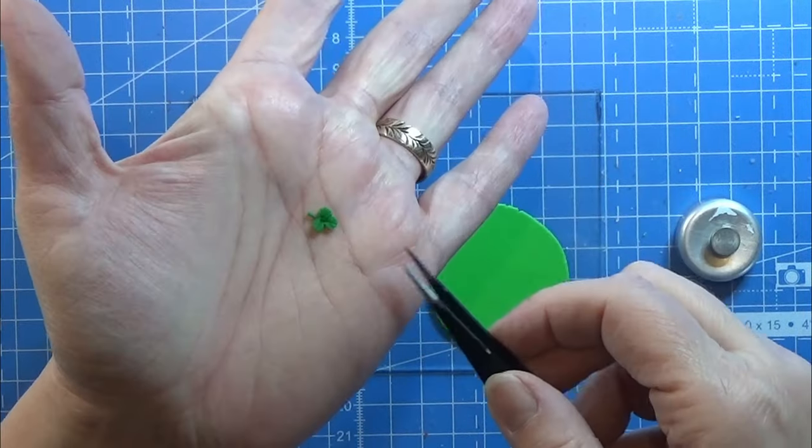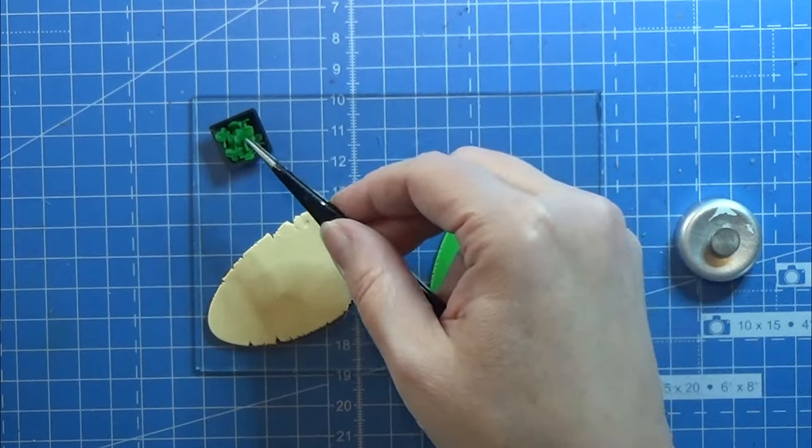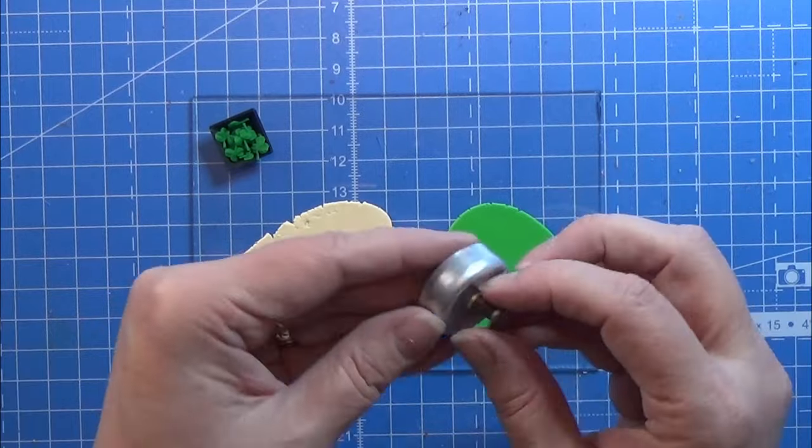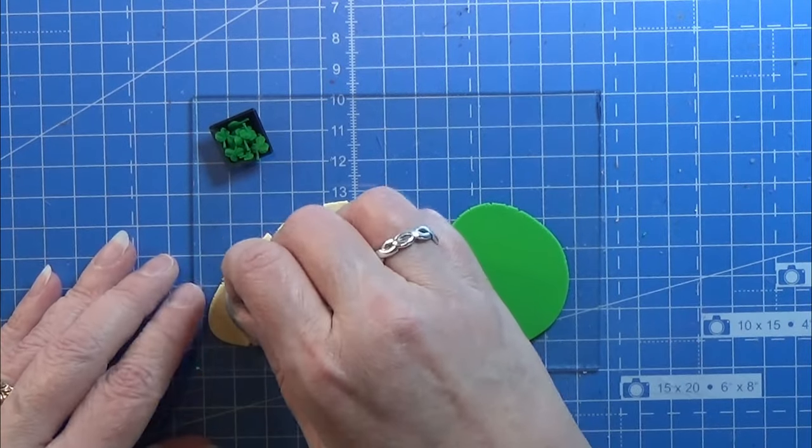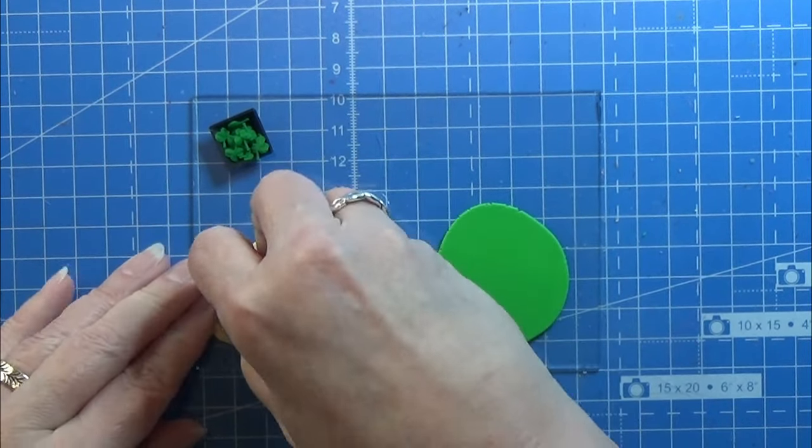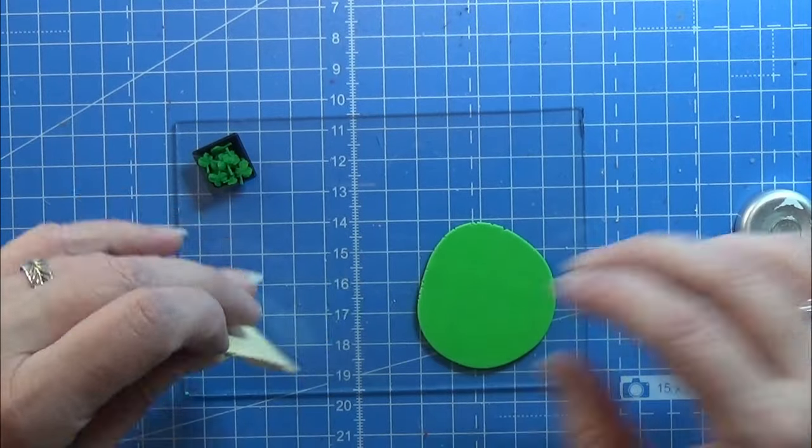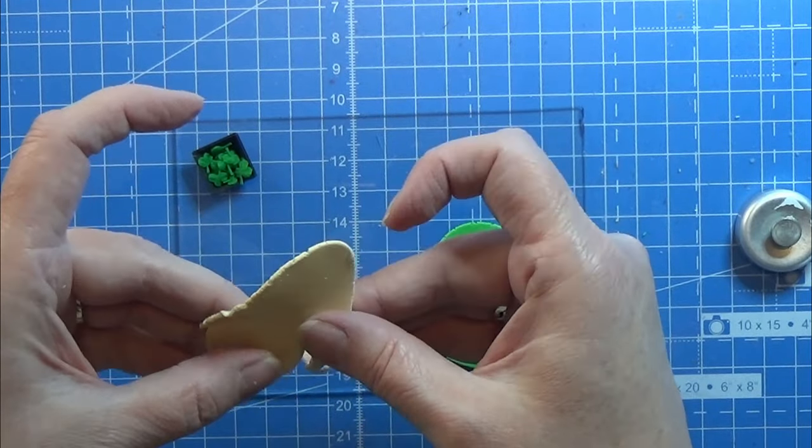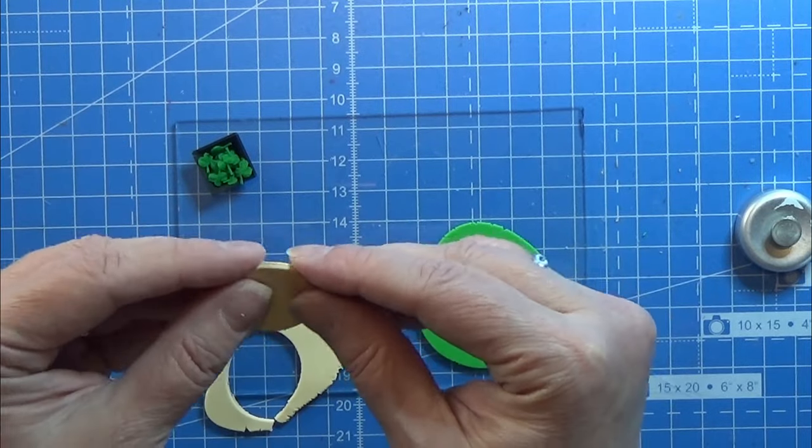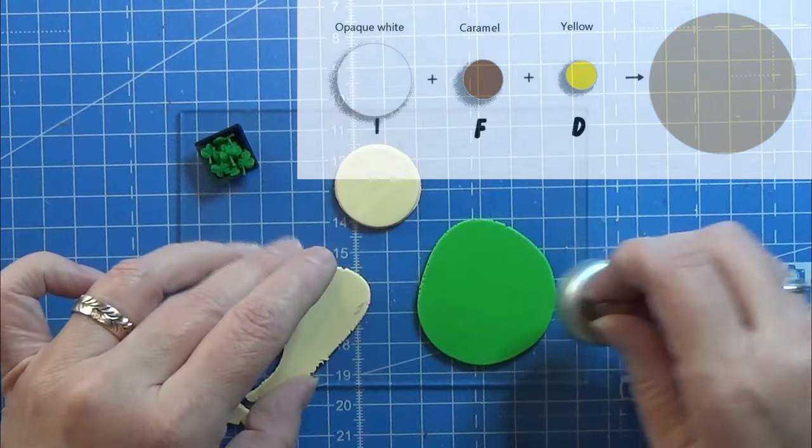So it is time to make something with these clovers we made last week. And I was thinking about making a layer cake. I haven't been doing that for a while. So I am going to take my cutter here and cut some circles out of this dough colored clay.